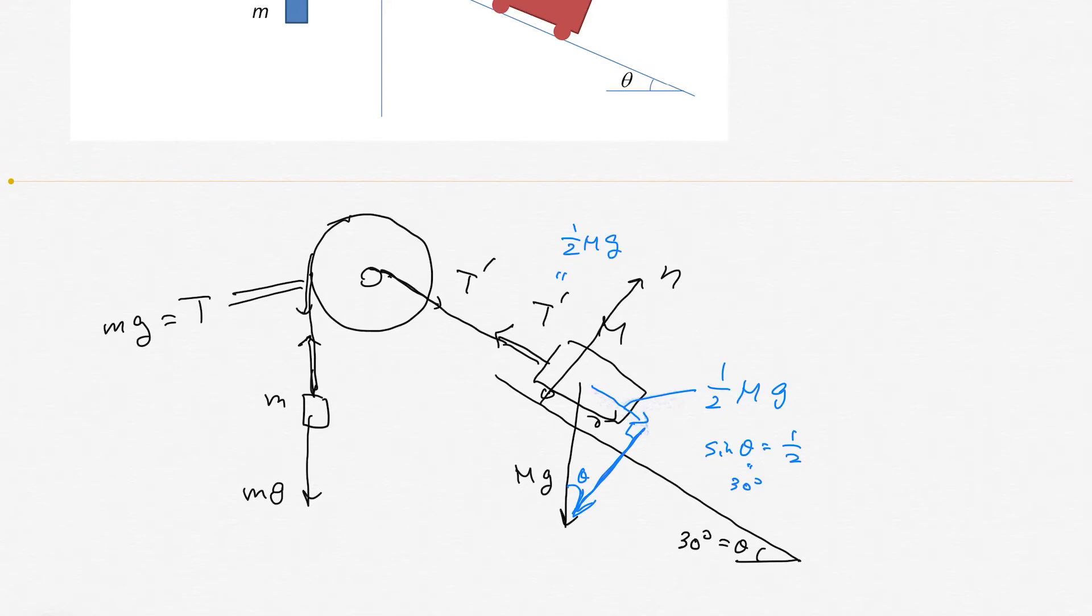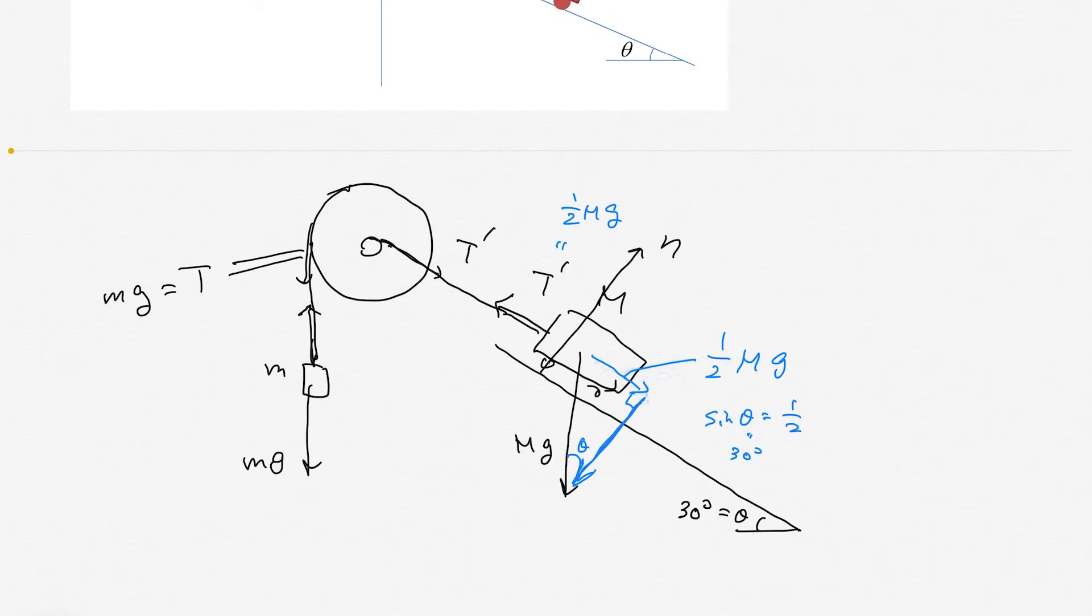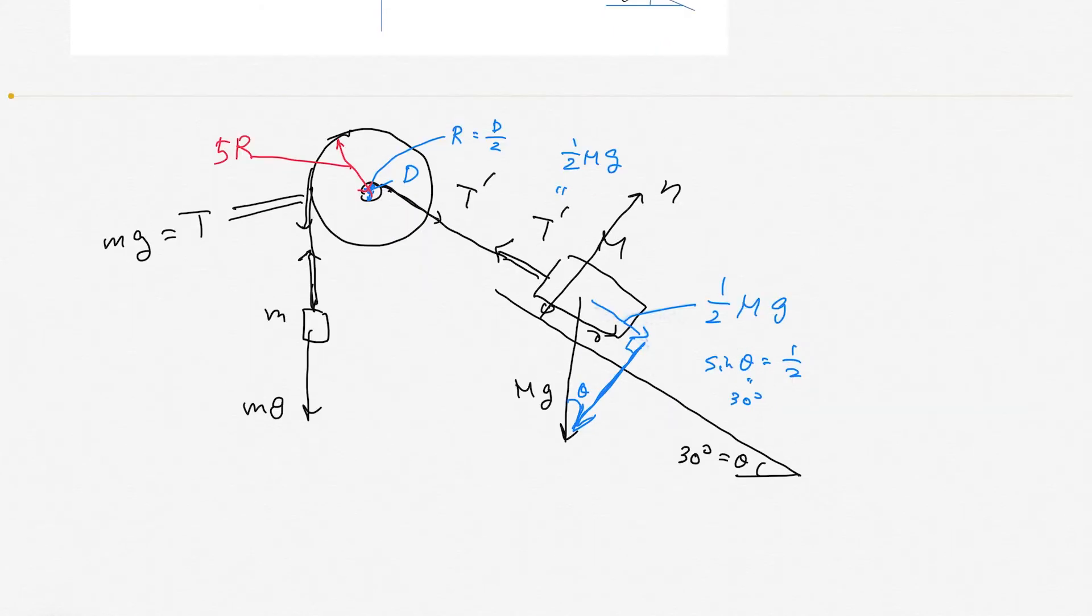And the diameter for the small circle, this one, for example, the diameter is D, then radius becomes r equal to D/2. And the big radius becomes 5R. Then we could consider the torque.